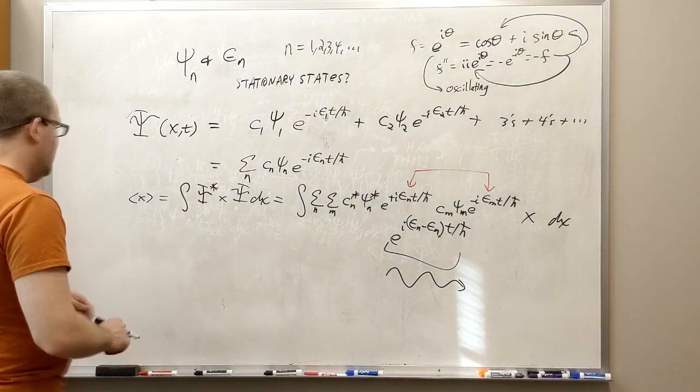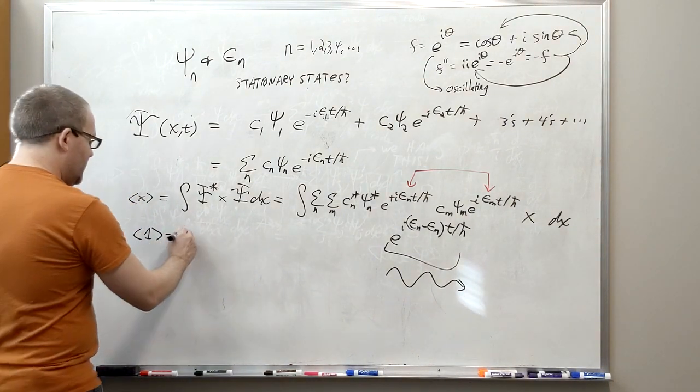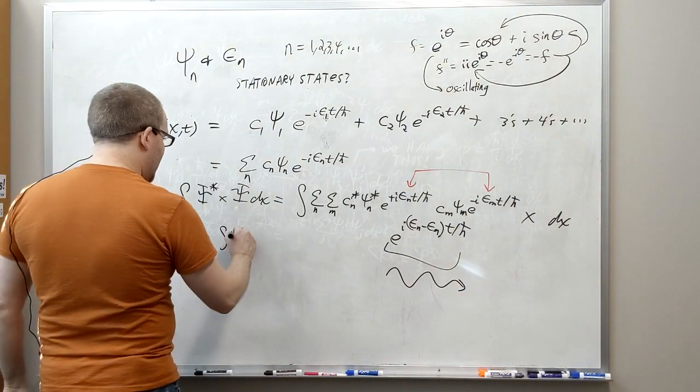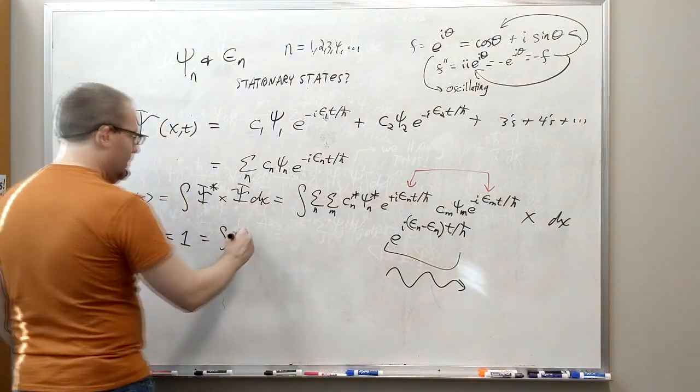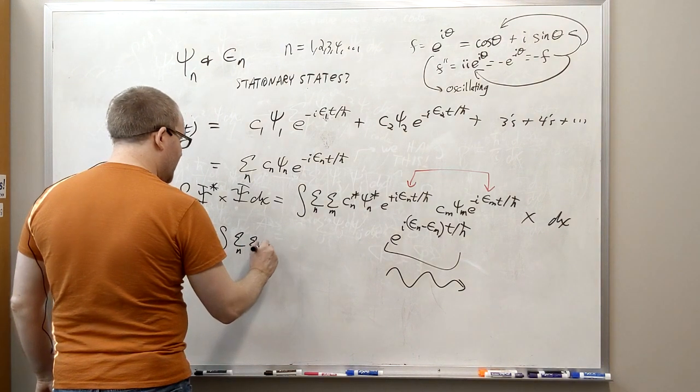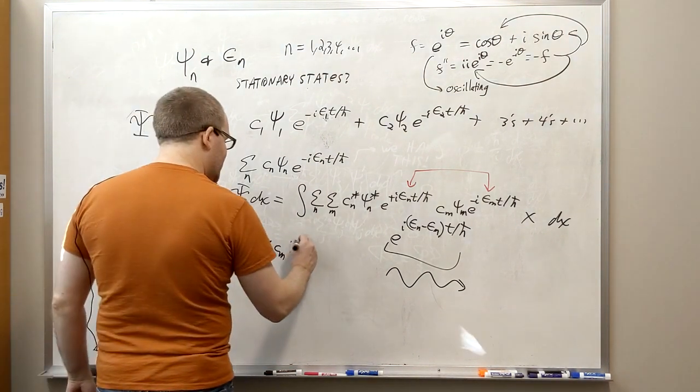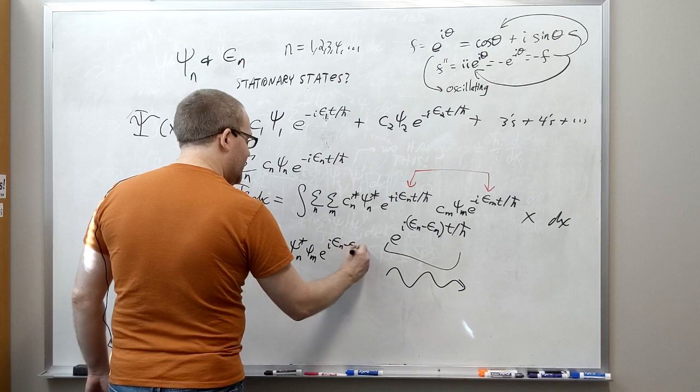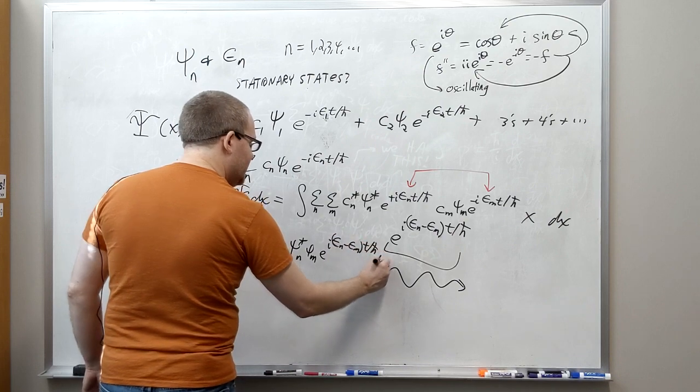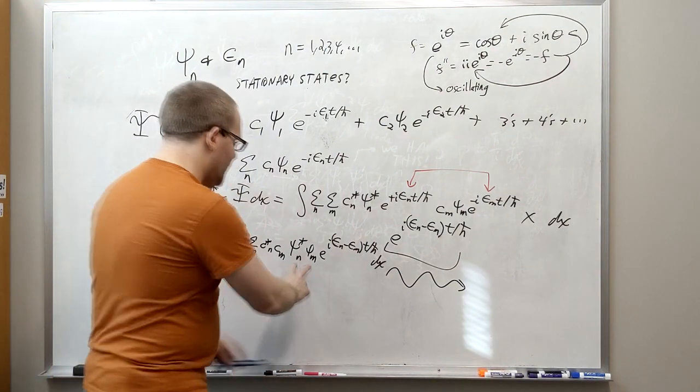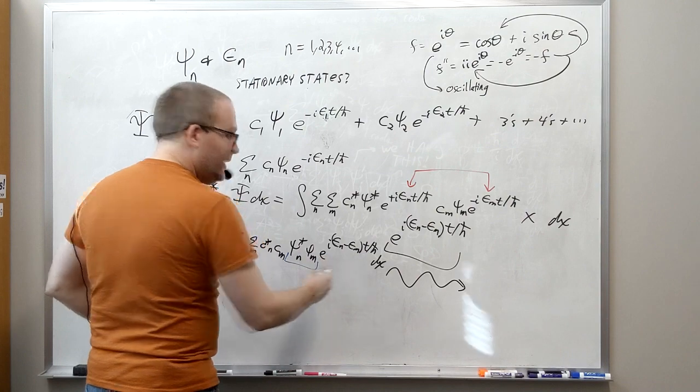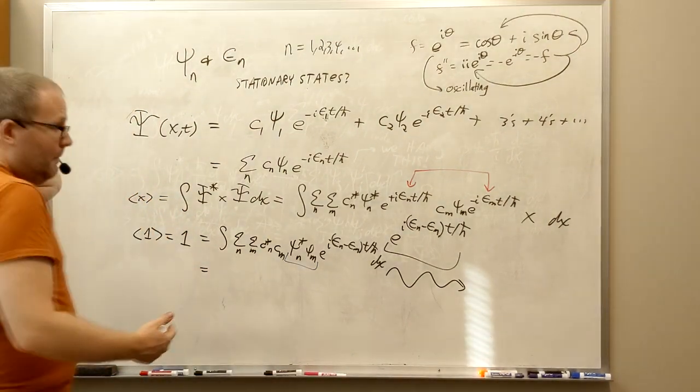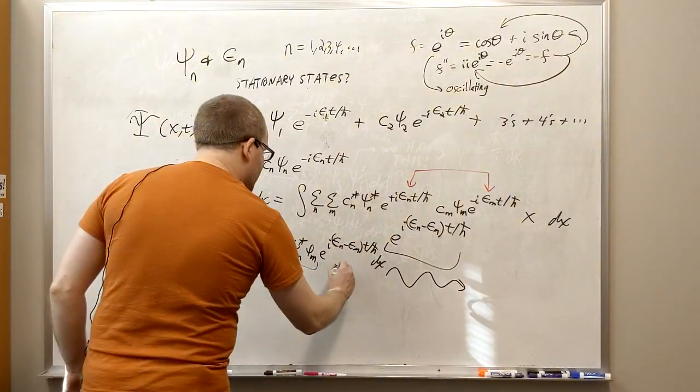By the way, this thing also has a normalization condition. If you want to take the expectation value of one, you had better get one out as the answer. So that needs to equal the integral of these two things against each other without a number in the middle or with a one in the middle. So that means a sum on n, a sum on m, c star n, c_m, psi star n, psi_m. And then e to the thing we have up here, i, e_n minus e_m, t over h bar dx. Well, the only things that depend on x here are the two psis. These are constants. This is a function of time. So this is the only thing that depends on x.